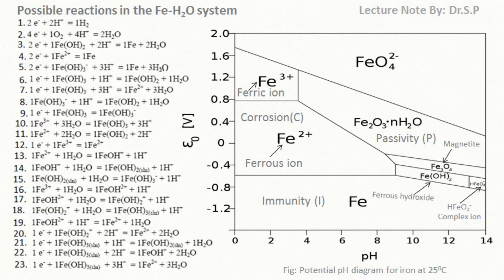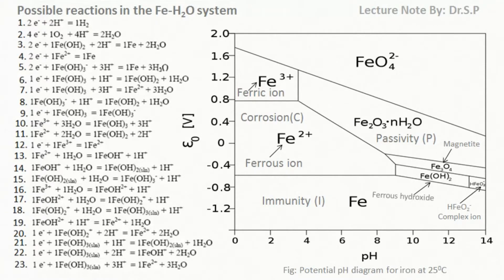The pure redox reactions are represented by the horizontal lines, and these reactions are not pH dependent. The pure acid-base reactions are represented by vertical lines, and these reactions do not depend on potential.